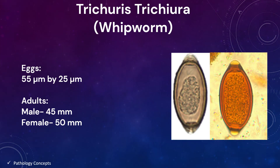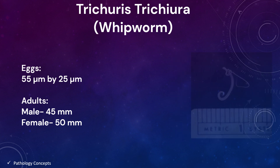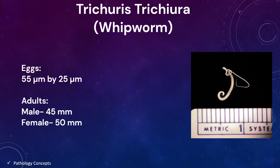Trichuris trichiura eggs are 55 microns by 25 microns in diameter. They are barrel-shaped, thick-shelled, and possess a pair of polar plugs at each end. Adult males are 45 mm long with a coiled posterior end, and adult females are 50 mm long with a straight posterior end. Both sexes have a long whip-like anterior end. Adults reside in the large intestine, cecum, and appendix of the host.